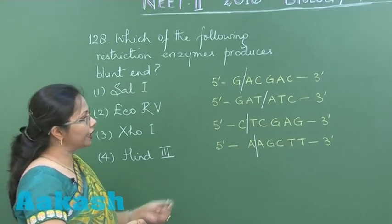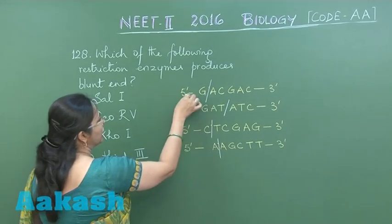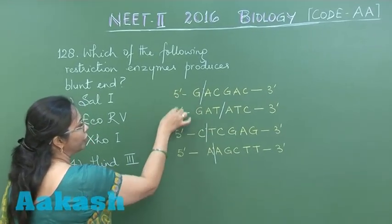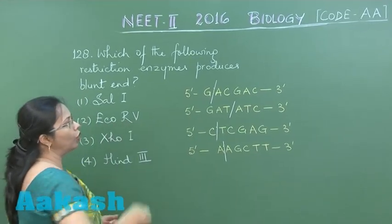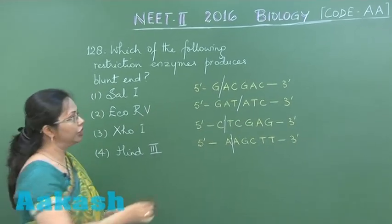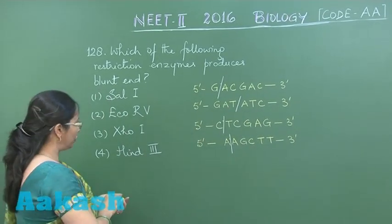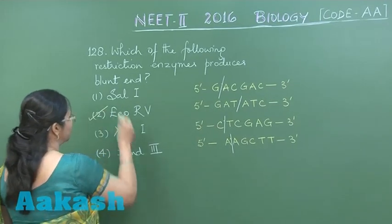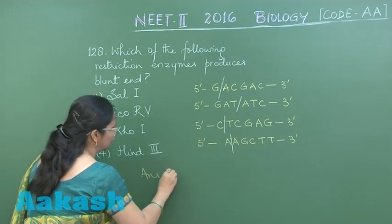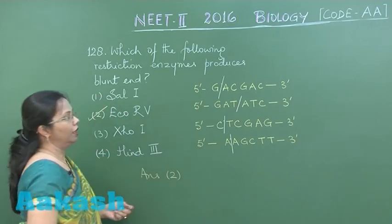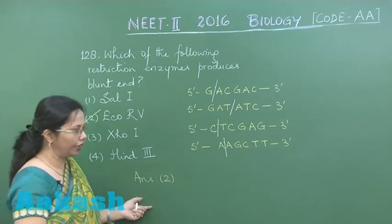We can see that SAL1, XHO1, and HINDI3 are producing flush ends, while ECOR5 is producing blunt ends. So our answer is option number 2, and with this we can move on to question 129.